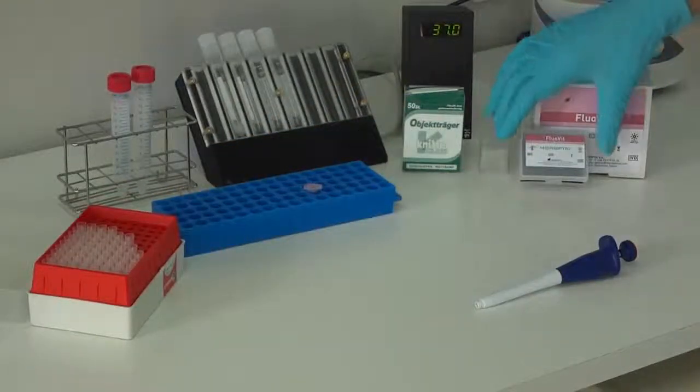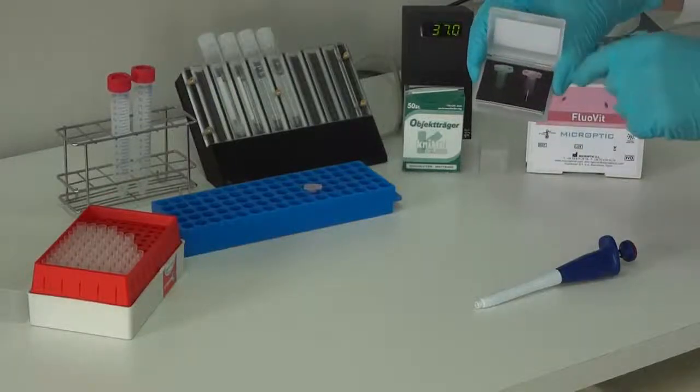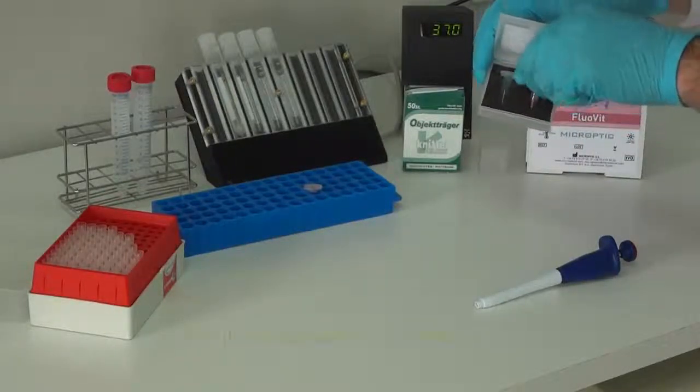Take off the Eppendorf from the incubator and add one microliter of red Eppendorf stain previously heated at 37 degrees centigrade.